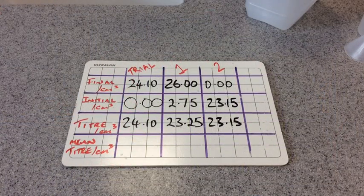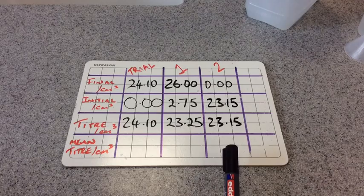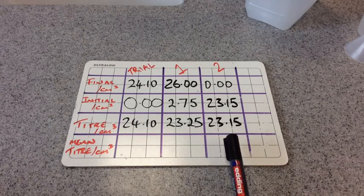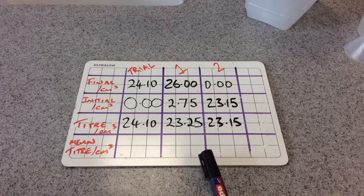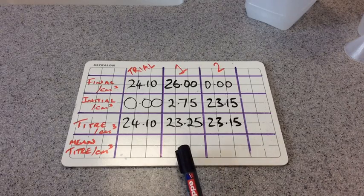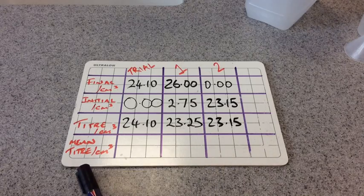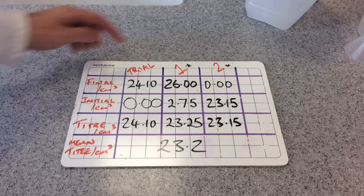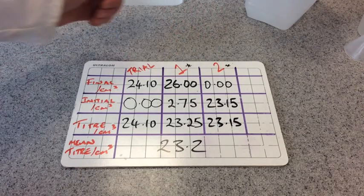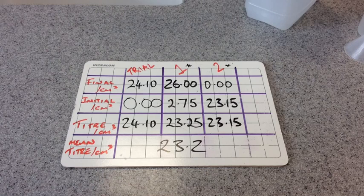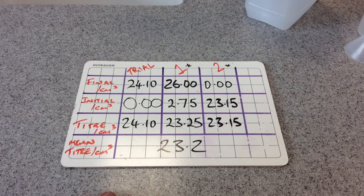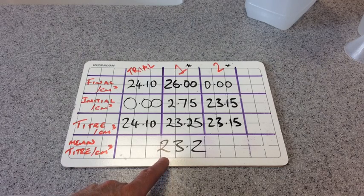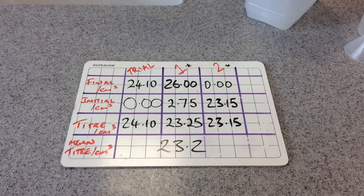So you can see I've done a second accurate titration and I've got a titra now of 23.15. So that's within the 0.10. So we call those concordant results. So I'm going to use these two in the calculation of the mean. A good idea is to star the results that you're going to use. So obviously I'm using these two here. We don't use the trial. The mean titra is always quoted to one decimal place. OCR insists on that. I'm not sure about other exam boards.